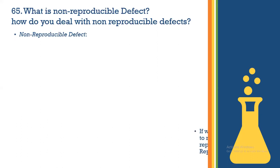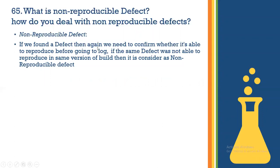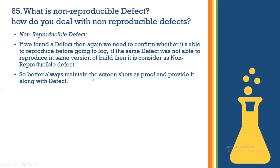If you found a defect, you need to confirm whether it is able to reproduce before logging it. If the same defect cannot be reproduced in the same version of the build, it is considered a non-reproducible defect. Always maintain screenshots as proof and provide them along with the defect. You can use Print Screen or the Snipping Tool to capture screenshots.